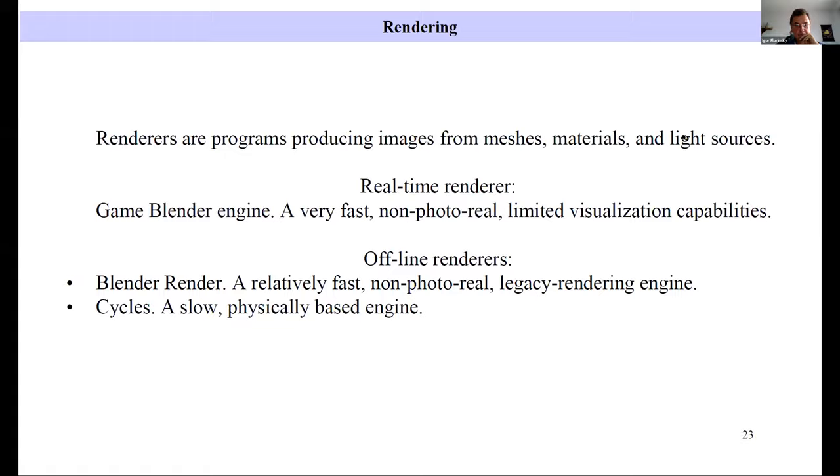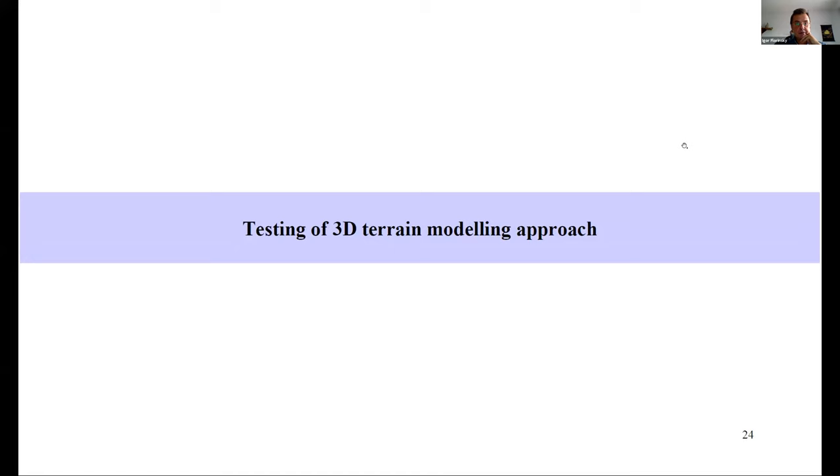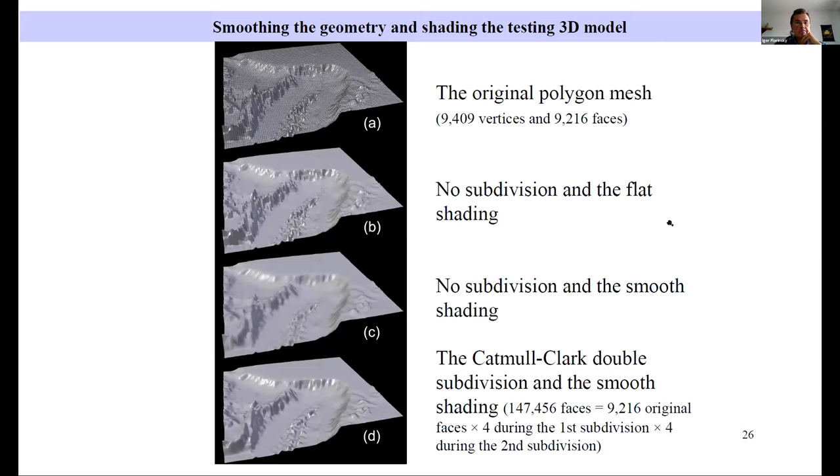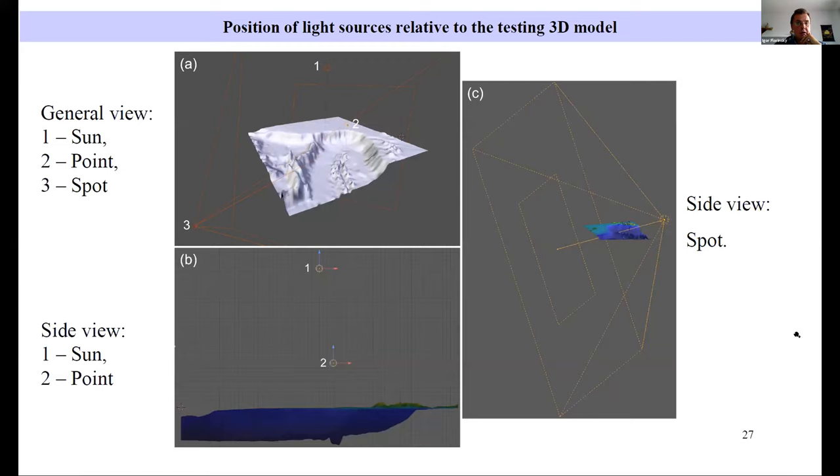Now I'll show you results of testing of this approach. For testing, we use very small DEM extracted from IBCAO version 3, with a resolution of 15 kilometers. We can see here this rectangle. Here you can see subdivision and shading of this. This is the testing original polygonal mesh. Here more subdivision flat shading. More subdivision and smooth shading. And finally, the Catmull-Clark double subdivision and smooth shading. Now you can see positions of three light sources: sun here, point here, and spot.